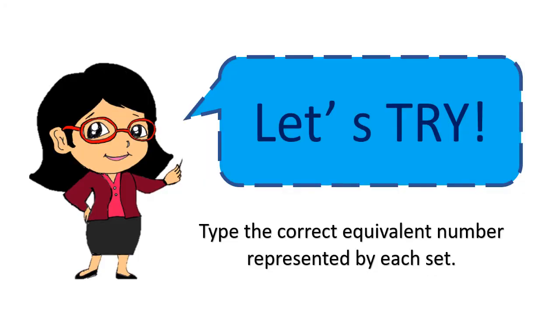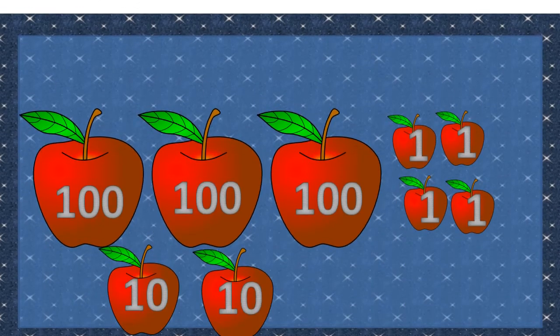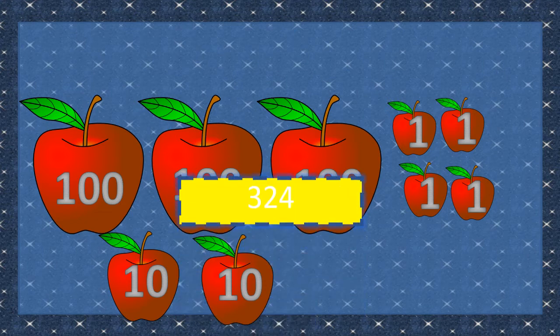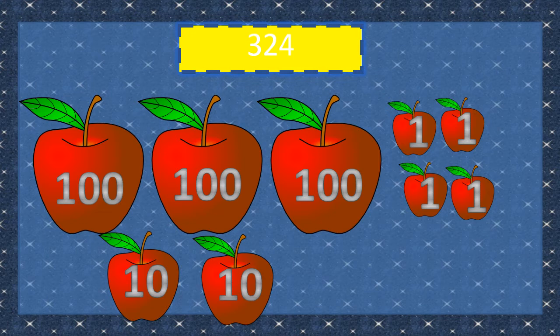Let us try this one. Tell me the correct equivalent number represented by each set. How many apples are there in this set? There are 3 hundreds, 2 tens, and 4 ones. There are 324 apples in this set.